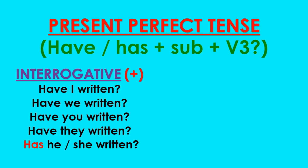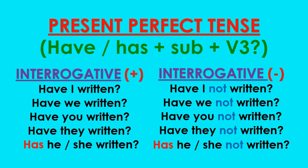Now let us see how we should frame negative questions in present perfect tense. The sentences are: 'Have I not written?' 'Have we not written?' 'Have you not written?' 'Have they not written?' And finally, in case of third person singular, it will be 'Has he or she not written?'